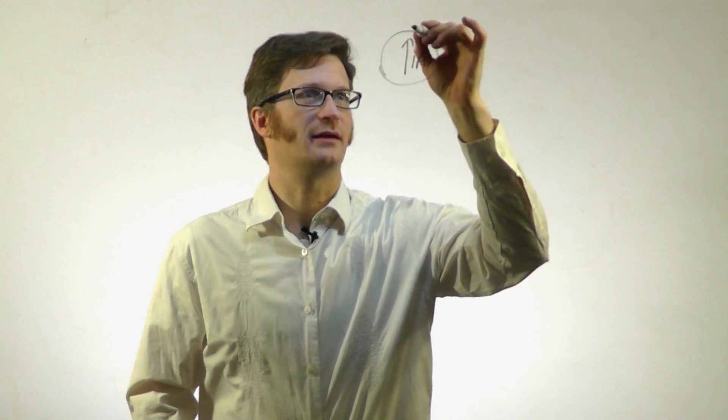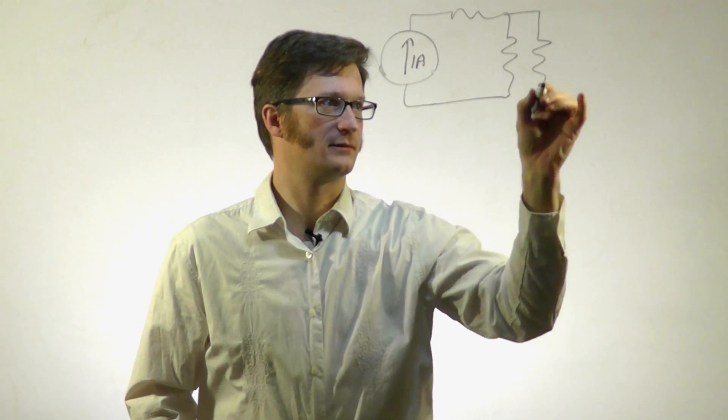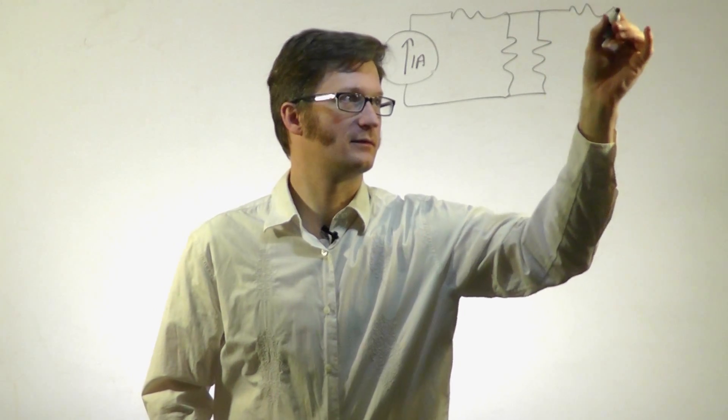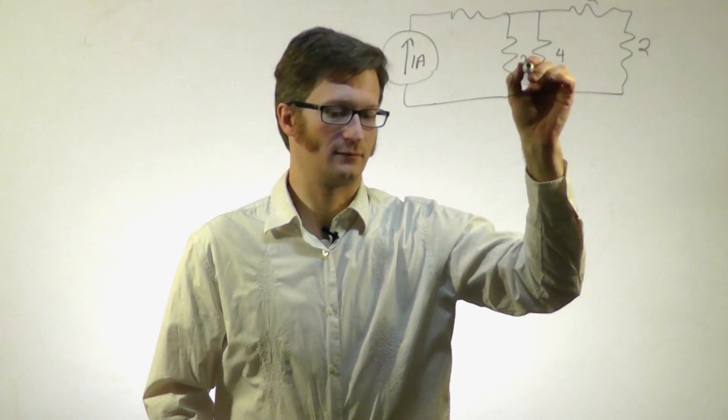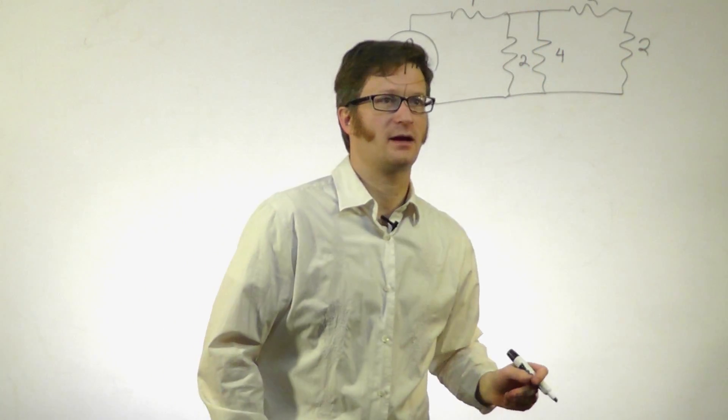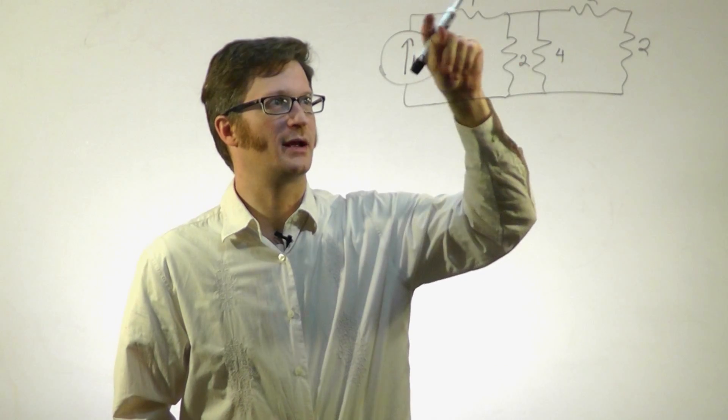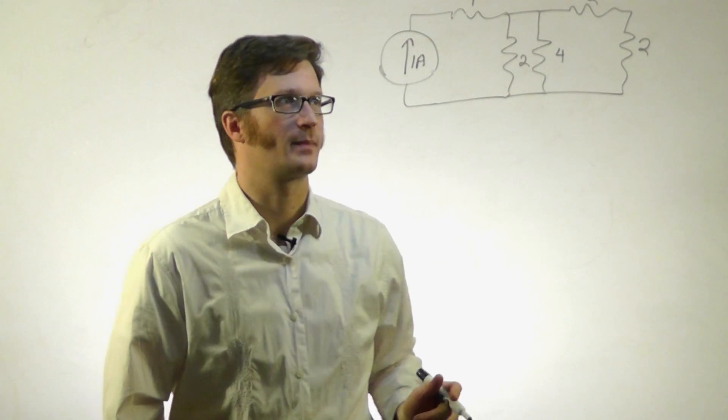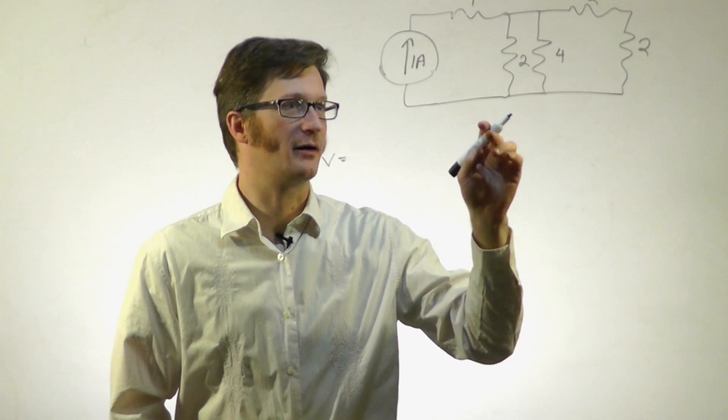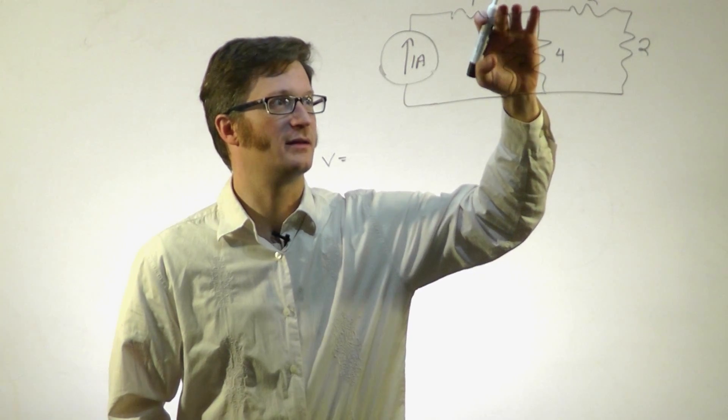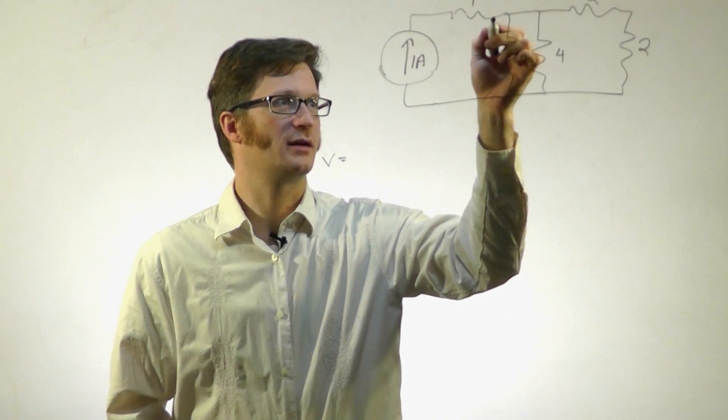Let's take a look at this. Right now we have 1 amp flowing into this resistor right here. Using Ohm's law, we can figure out what the voltage is between this point and this point, because we know that 1 amp is flowing here. This resistor is helping us figure it out.